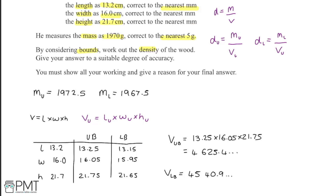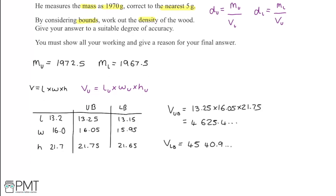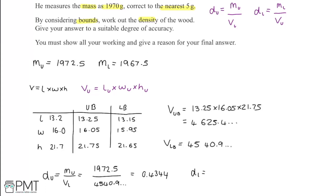Now with bounds for both volume and mass, we calculate the density bounds. The upper bound for density is the upper bound for mass over the lower bound for volume: 1972.5 ÷ 4540.9 ≈ 0.4344. The lower bound for density is the lower bound for mass over the upper bound for volume: 1967.5 ÷ 4625.4 ≈ 0.4254.